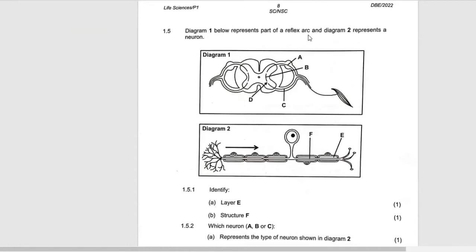The diagram represents part of a reflex arc and diagram two represents a neuron. They're saying that you must know how to label all this. You must know how to label all this.